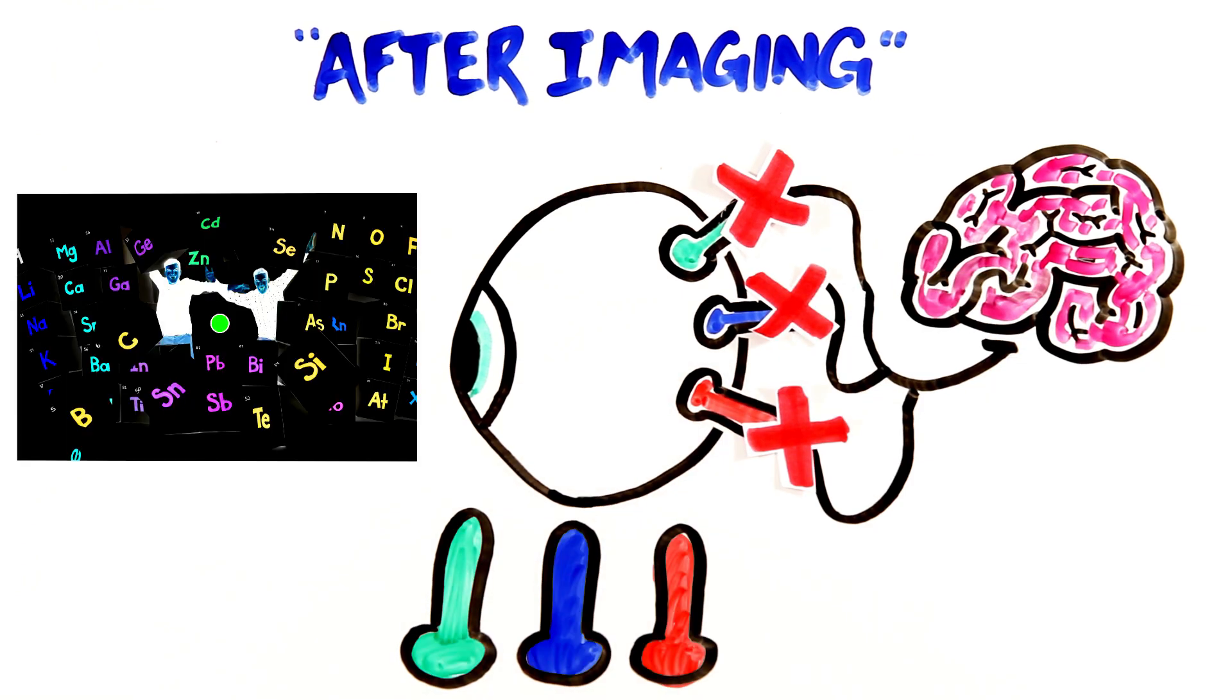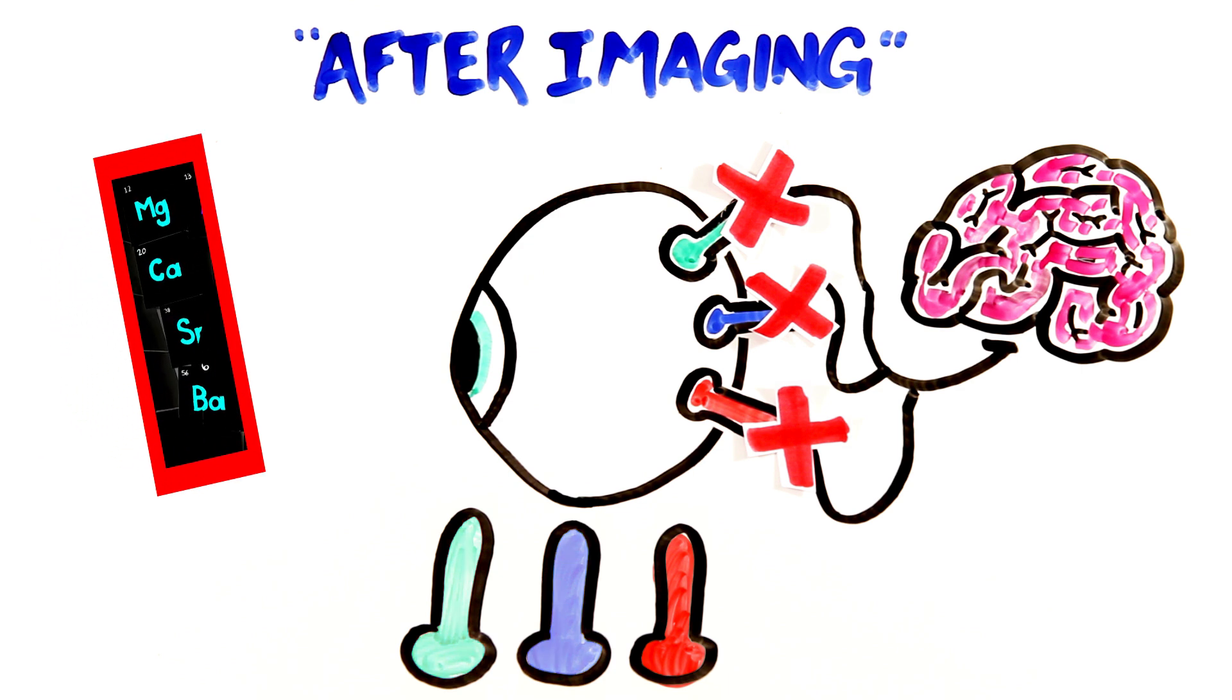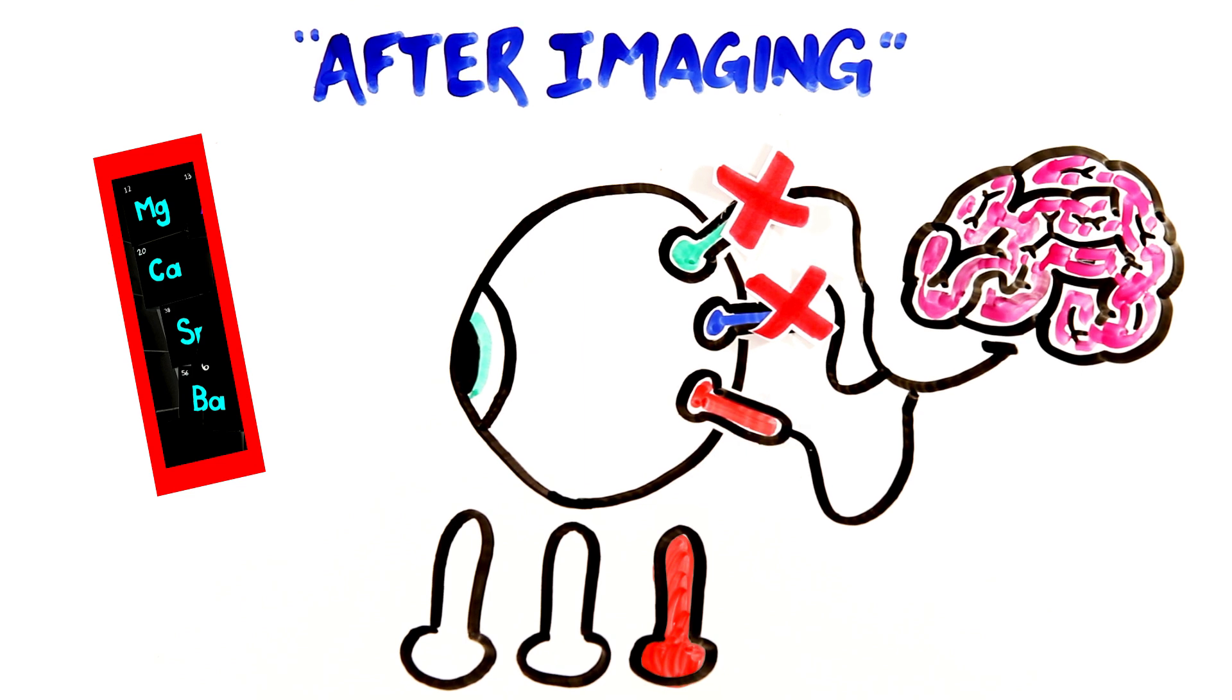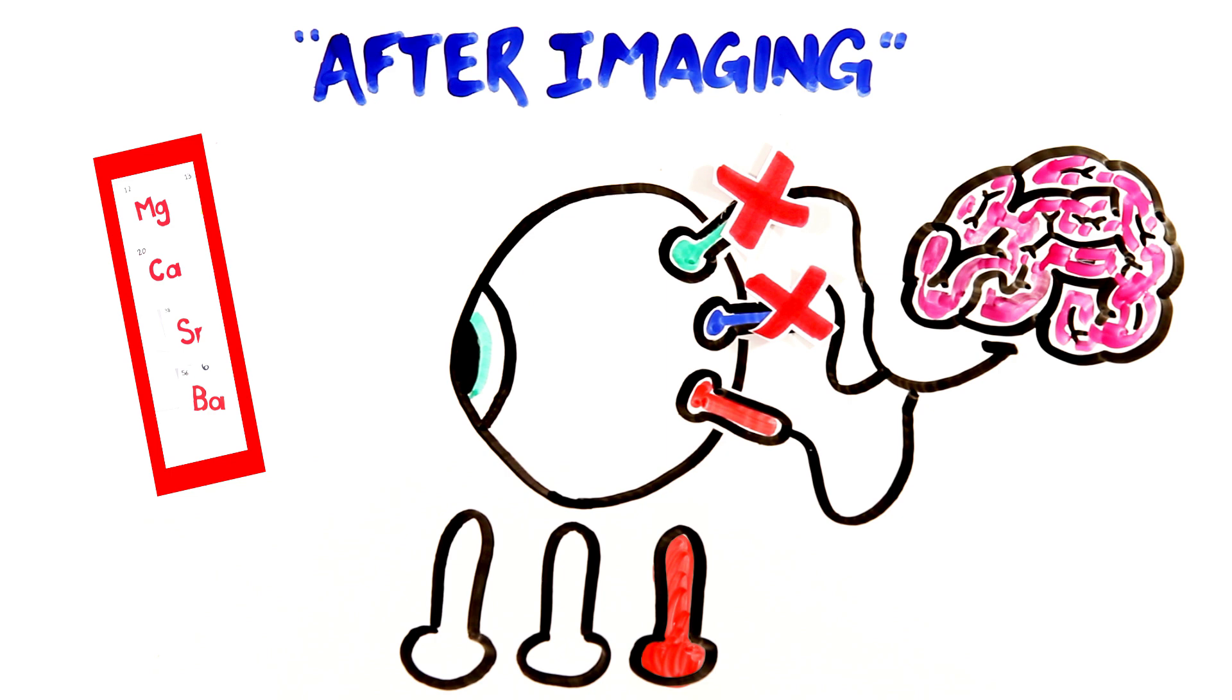In the case of this illusion, the part of the photo where you see cyan, the green and blue cones become tired and as a result there is increased activity in the unfatigued red cones. So when the image switched to black and white, we see red, cyan's complementary color.